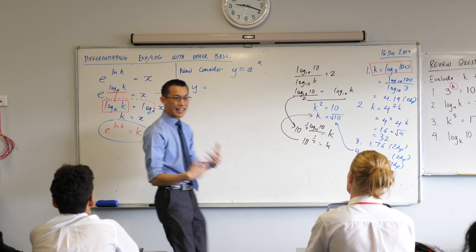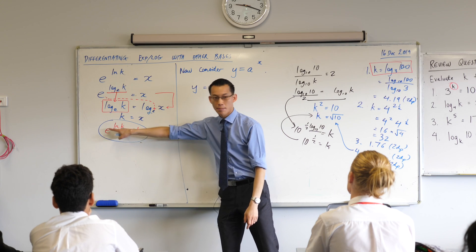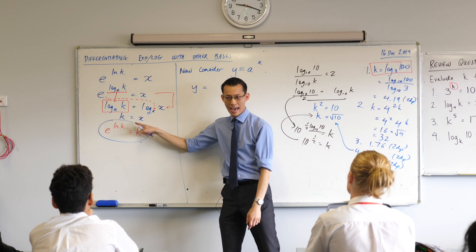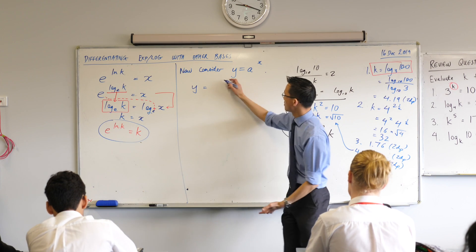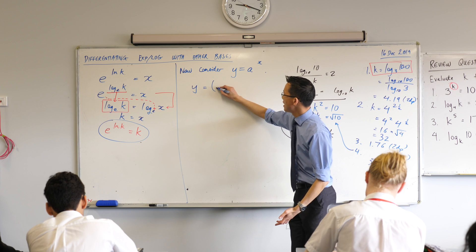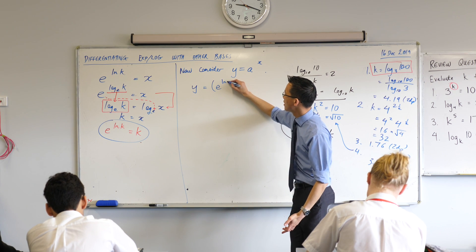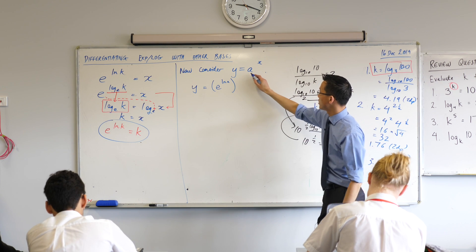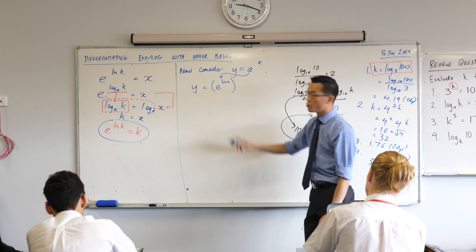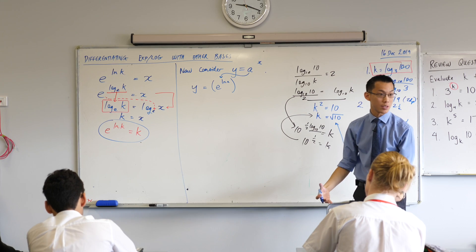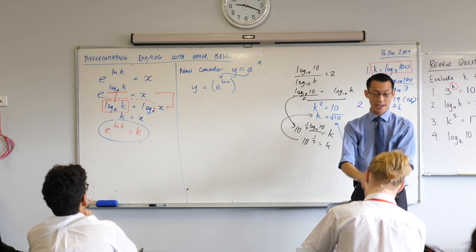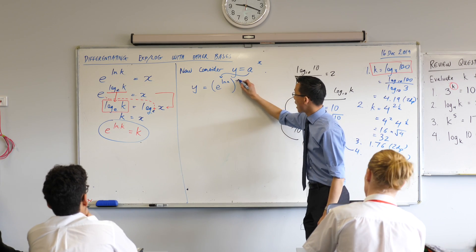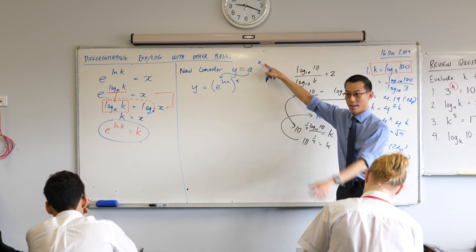So instead of writing a, I'll write it as e to the power of log a. Is that all right? Let me write that — e to the power of log a. You just told me those things were equal, and you just tried it on your calculator. And then that's to the power of x, because that's what I have in the first line.